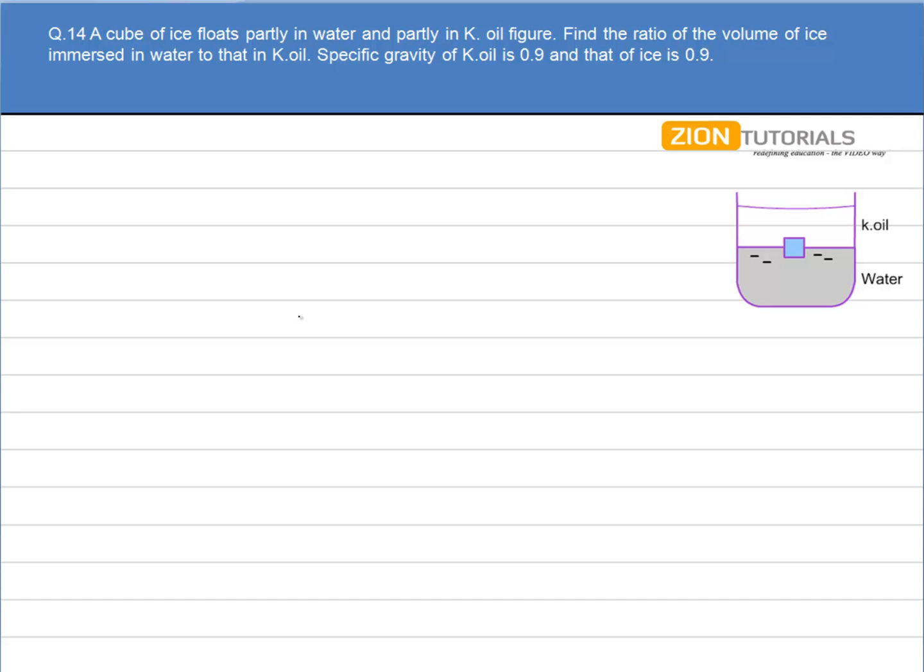A cube of ice floats partly in water and partly in kerosene oil as shown. Find the ratio of the volume of ice immersed in water to that in kerosene oil. The specific gravity of kerosene oil is 0.9 and that of ice is also 0.9.